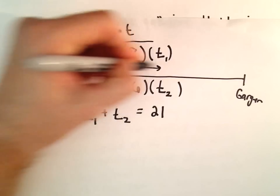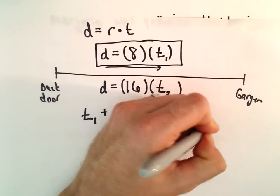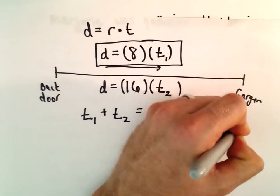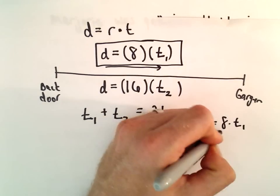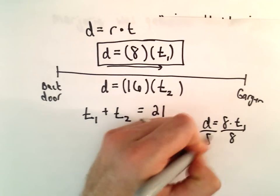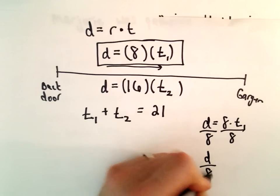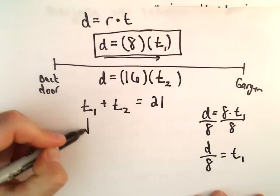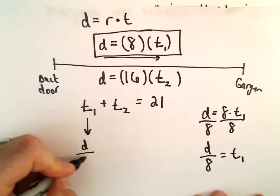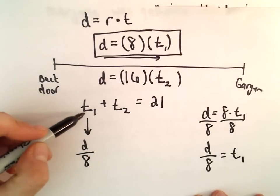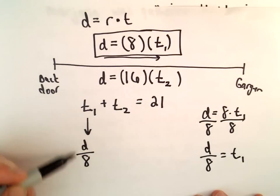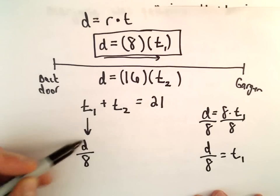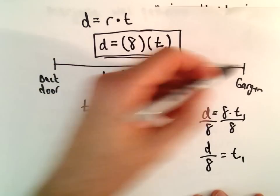So we've got this equation that D equals 8 times T1. Well, we can divide both sides by 8. That'll give us D over 8 equals T sub 1. That's what I'm going to plug in here. So D over 8 is our T sub 1. Notice now we're creating an equation that involves distance. And that's what the problem was interested in. What was the distance?